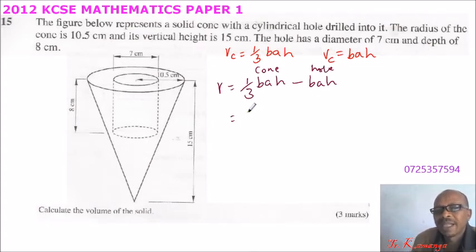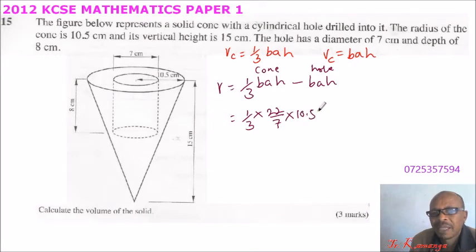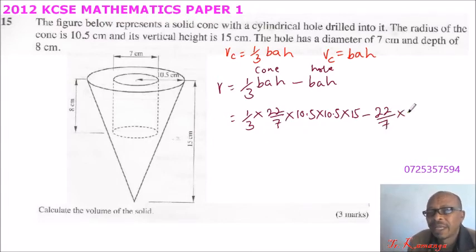So we can substitute here and say this will be a third. The base area is pi r squared, so it is 22 over 7 multiplied by r squared. The radius of the cone is 10.5, so 10.5 multiplied by 10.5, you multiply by the height which is 15. So that will give us the volume of the cone. We minus the volume of the hole. The volume of the hole is pi r squared, and that is 3.5 multiplied by 3.5, you multiply by height which is 8.